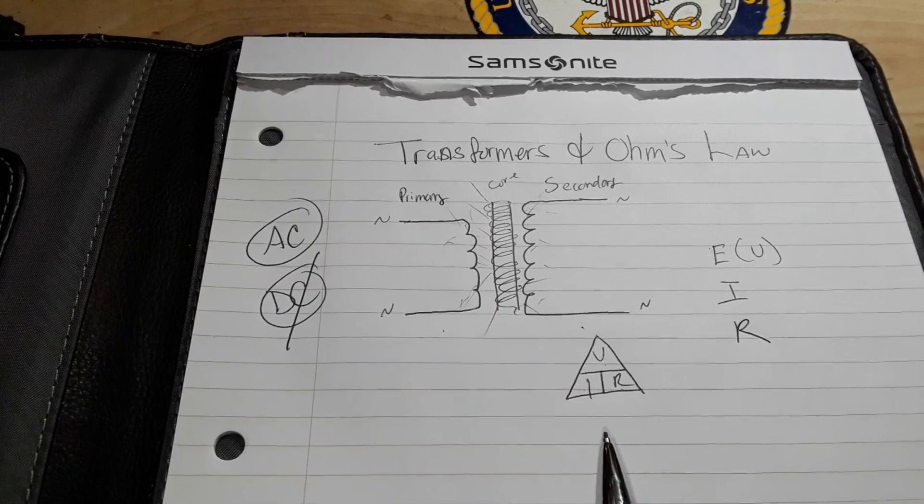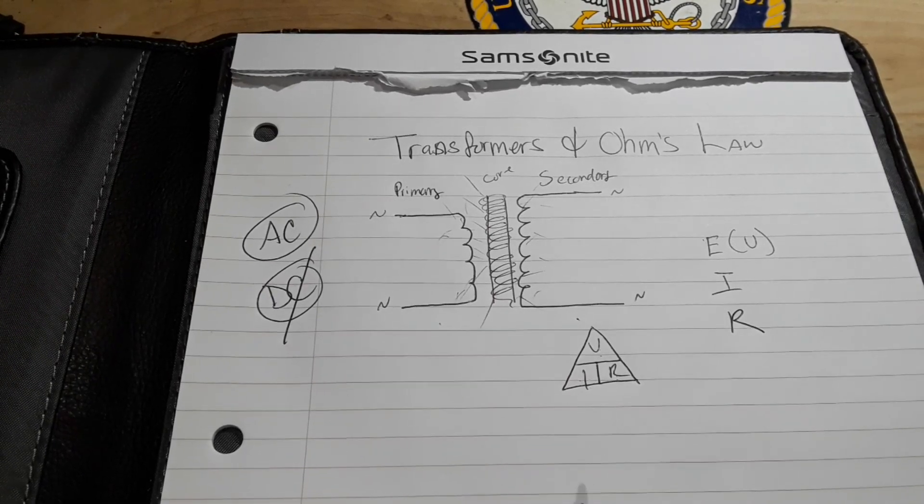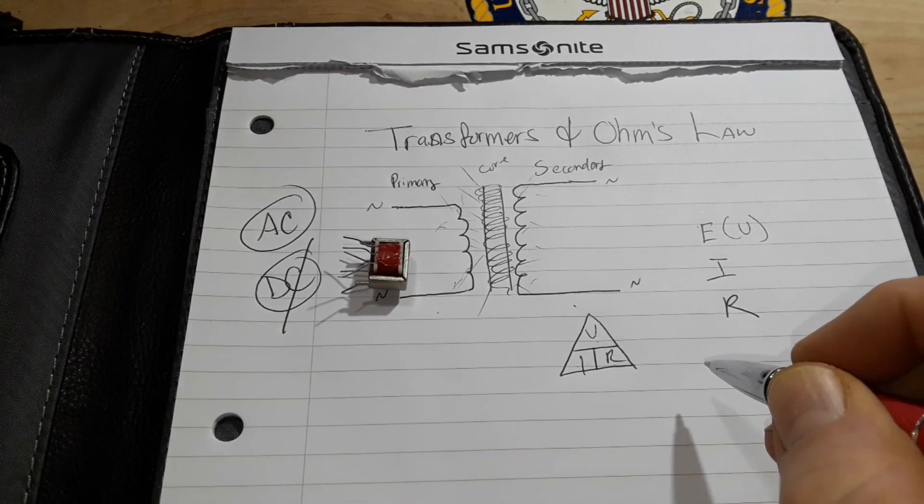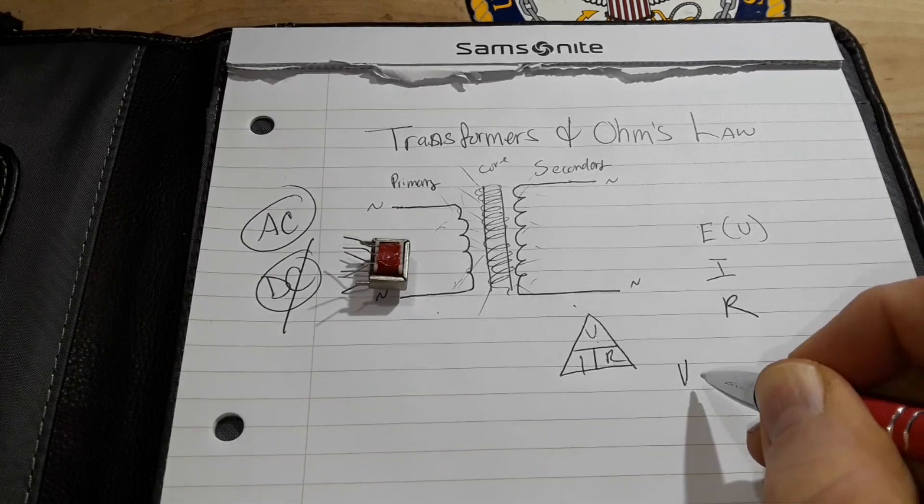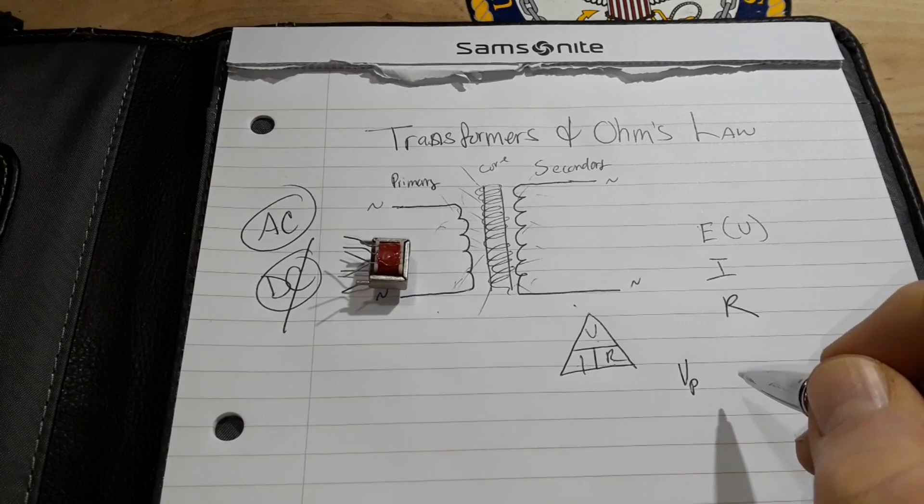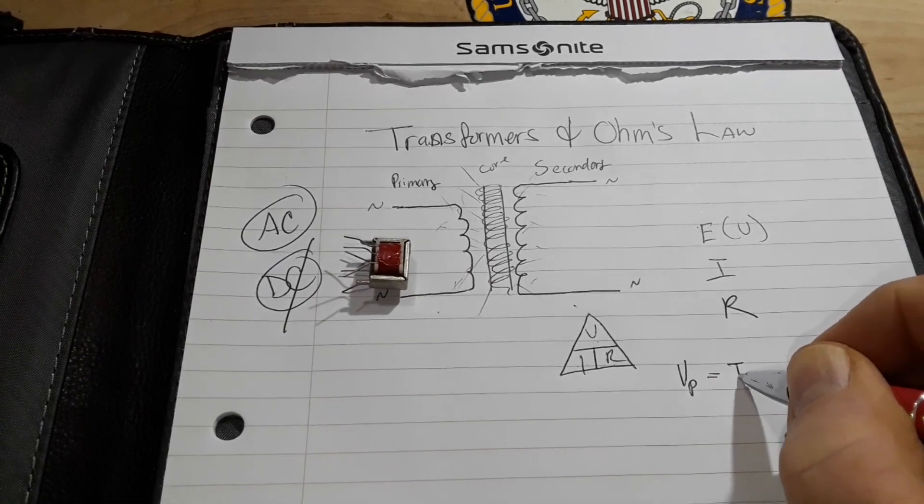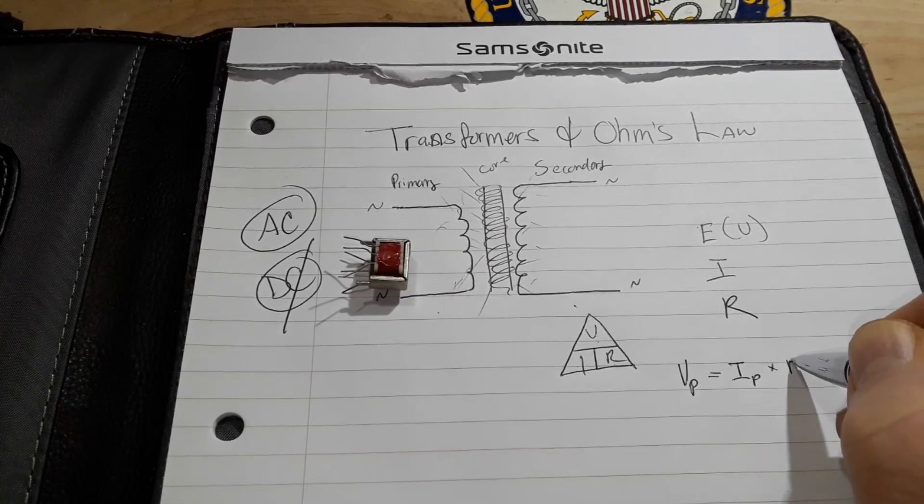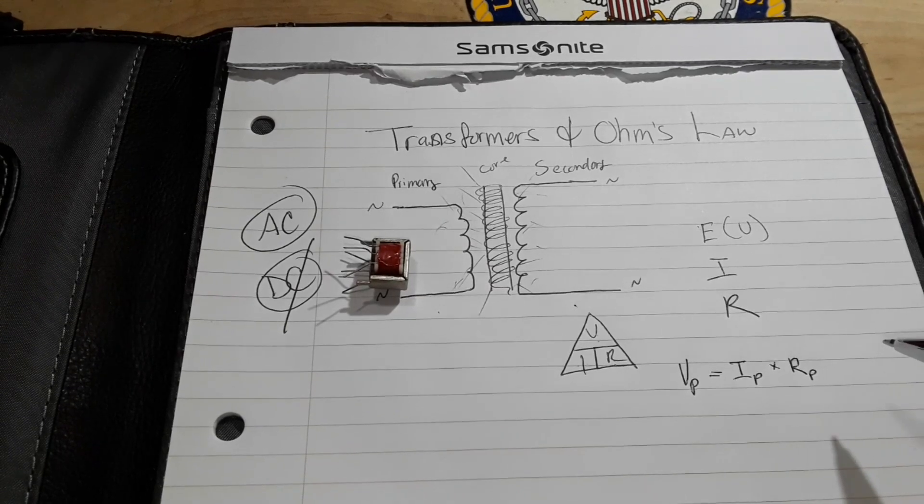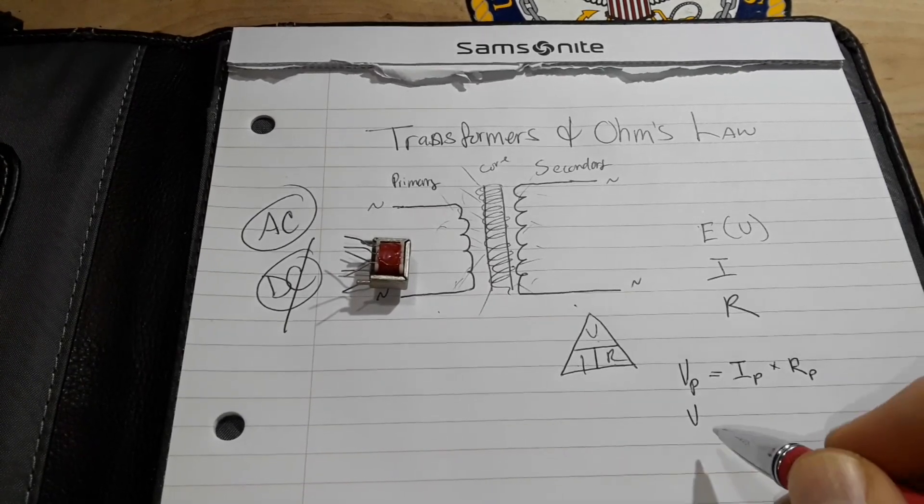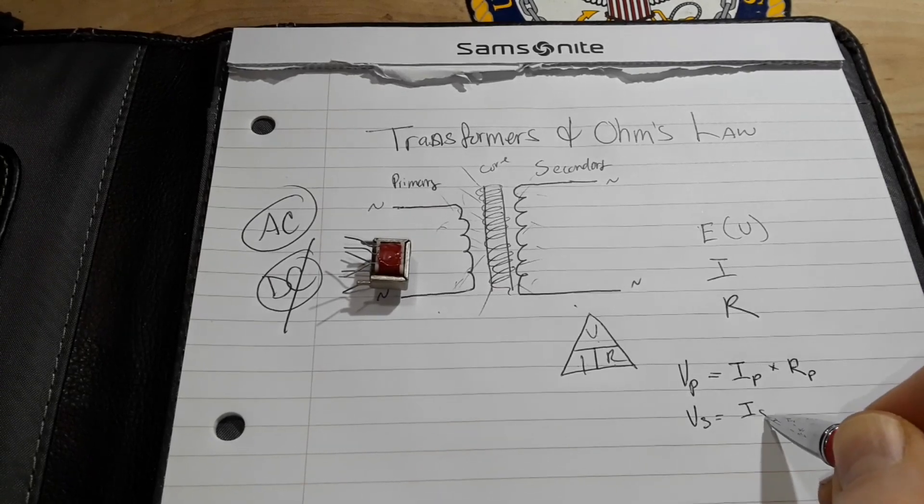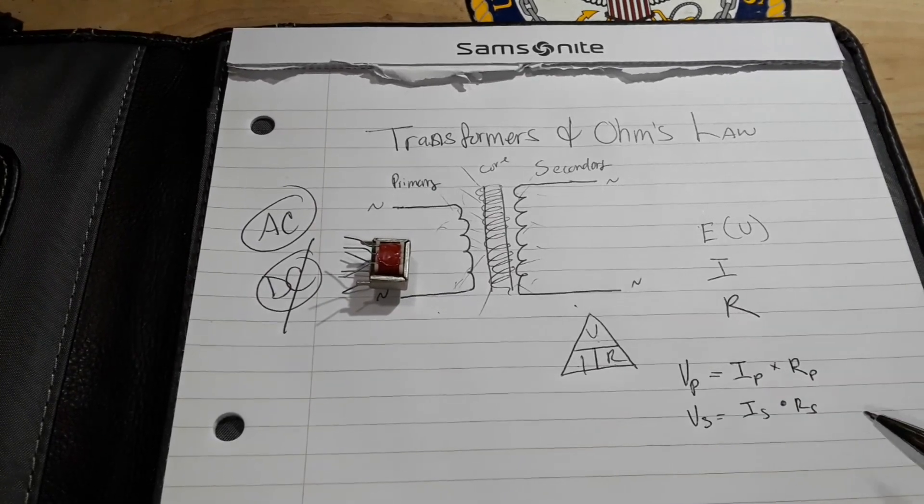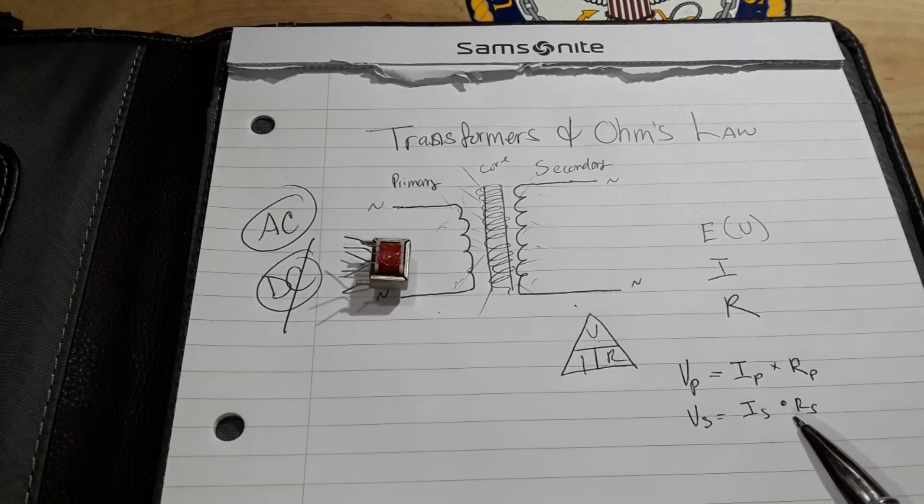So now we can take our Ohm's law triangle and apply it more in the realm of the transformer. Because we can say a couple of equations. We can say V primary, V sub P, is equal to I primary times R primary. And subsequently, V secondary is equal to I secondary times R secondary. So you see how they kind of mesh together? Everything fits in place.